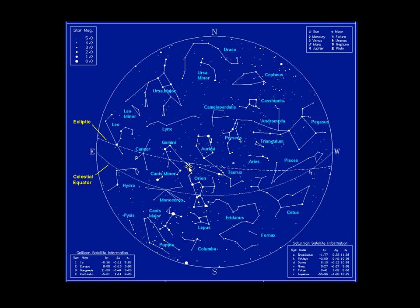There are a couple of features I want to point out in this star map. There's this thing called the ecliptic and there's this thing called the celestial equator. Both of these are located fairly high in the sky. This is your northern horizon, your western, southern, and eastern horizon. Looking straight up, you see the ecliptic and the celestial equator are pretty high up in the sky, and this is what we want to really understand in this video today.